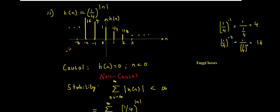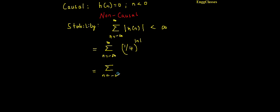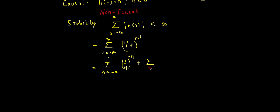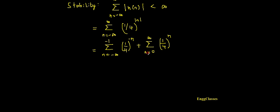We cannot directly evaluate the limit from minus infinity to infinity, so we split the limits. The first part runs from n equal to minus infinity to minus one with (1/4) to the power of negative n, and the second part runs from n equal to zero to infinity with (1/4) to the power of positive n.